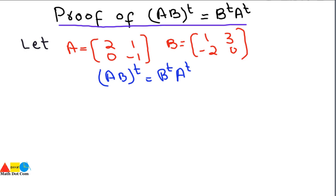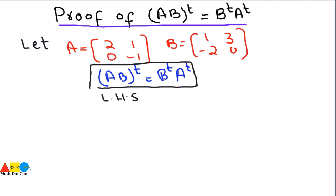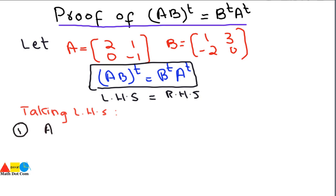We will work with this expression, which has two parts: left hand side equals right hand side. We will start from the left hand side and solve it step by step. Taking the left hand side, we need to prove AB whole transpose. Step 1 is to find the product of A and B.